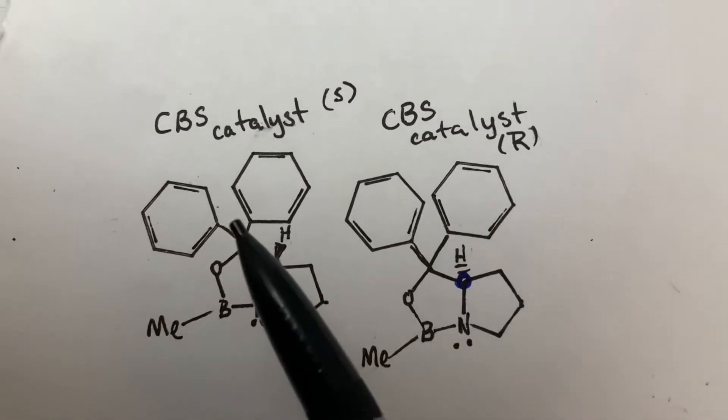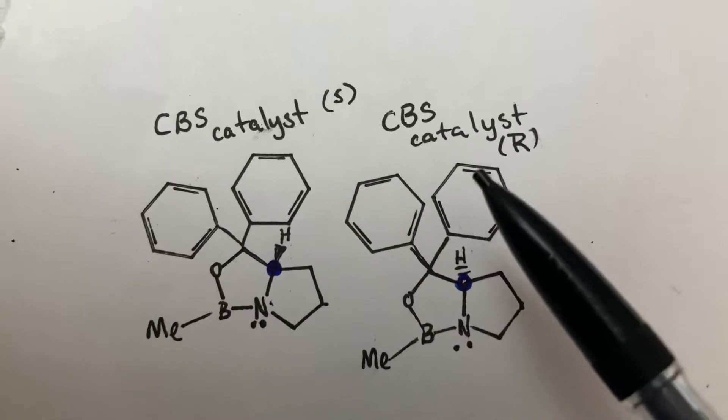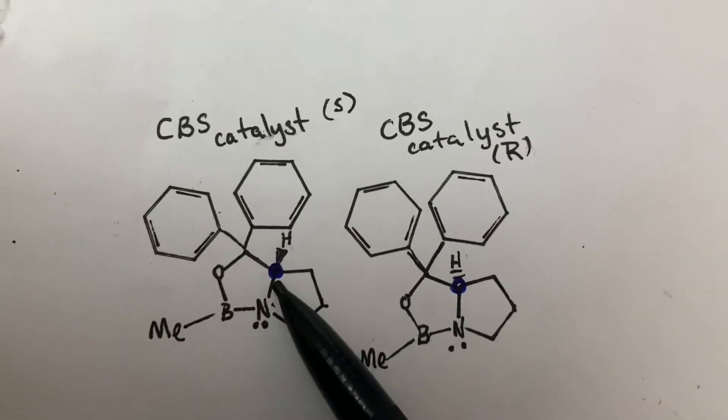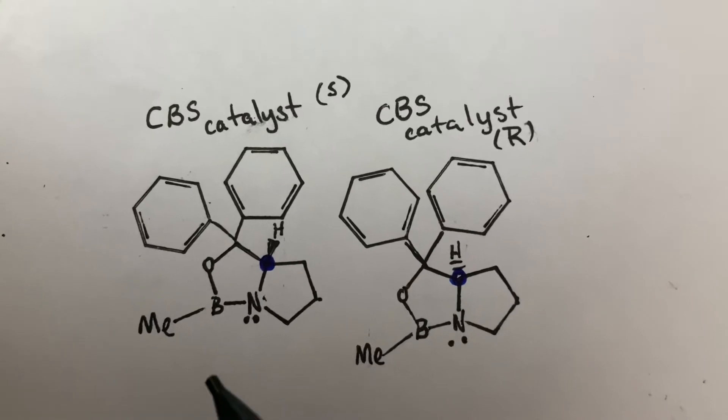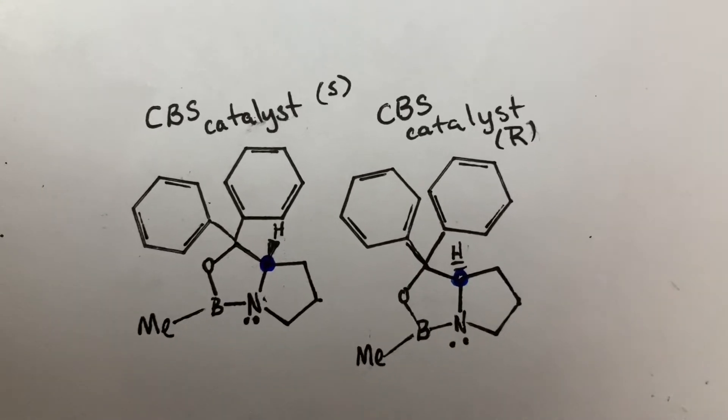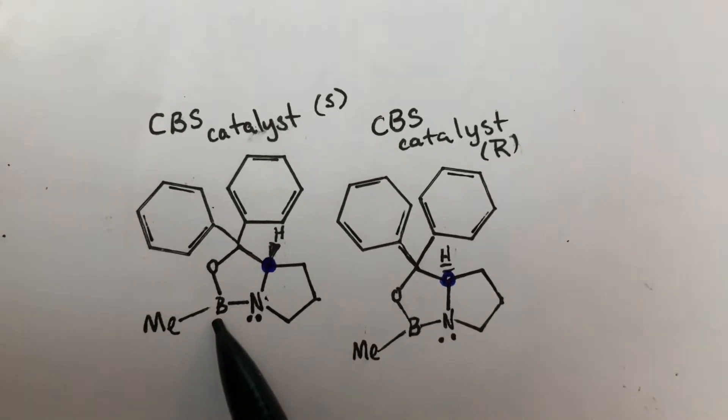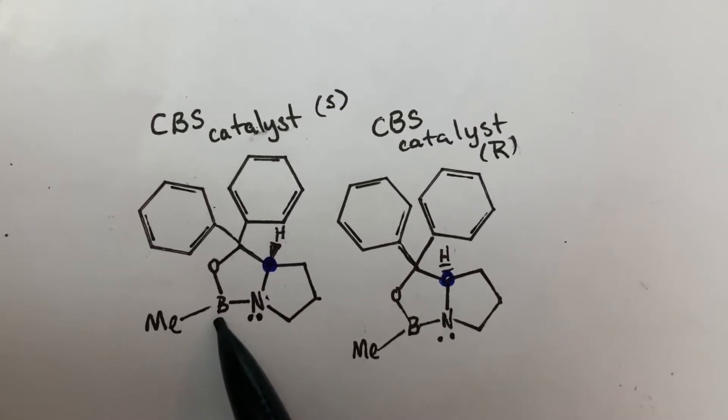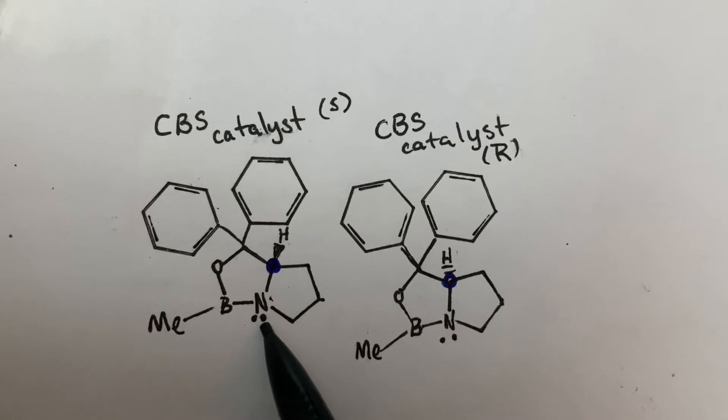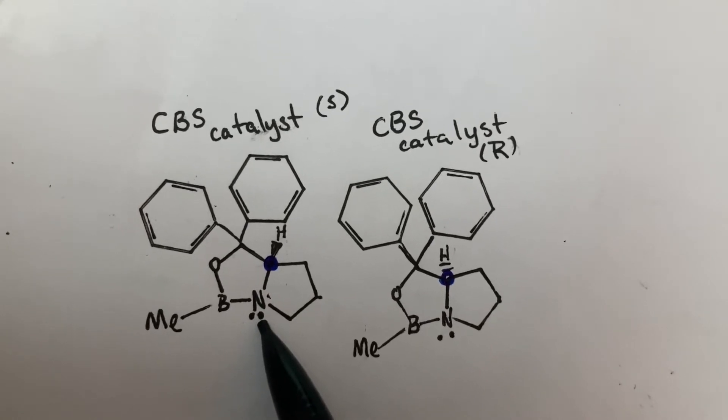The S-configuration or R-configuration, as seen with the chirality center here in blue, and this catalyst will act both as a Lewis acid and a Lewis base. This boron atom will act as a Lewis acid in the reactions, and this nitrogen atom will act as a Lewis base.